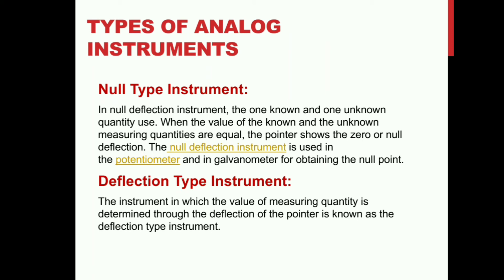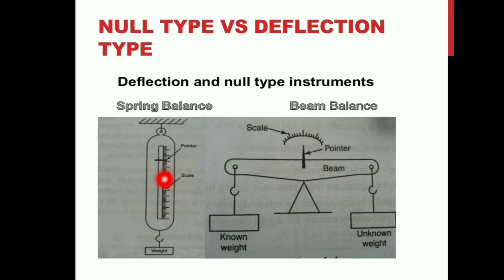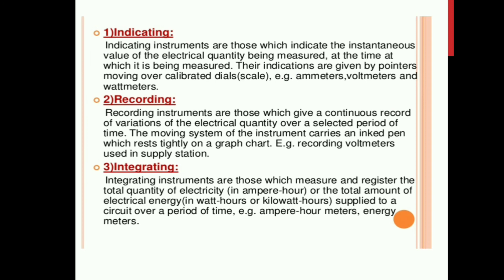Deflection type instrument: The instrument in which the value of measuring quantity is determined through the deflection of the pointer is known as a deflection type instrument. The pointer moves over a calibrated scale to show the direct value. Examples: spring balance is a deflection type instrument; beam balance is a null type instrument.